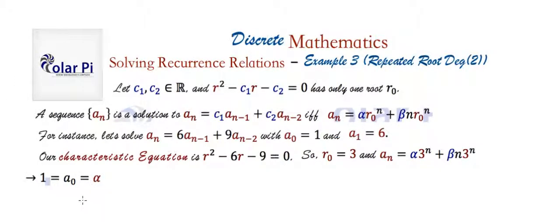And alpha has to be 1 because, well, if a 0 is 1, that means n is 0. So we have a 0 on the left, 1 equals with n 0. The right side will be alpha times 3 to the 0. That's alpha plus beta times 0 times, who cares? So that just says 1 is equal to alpha.